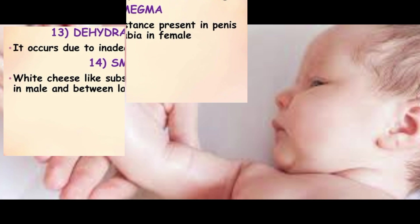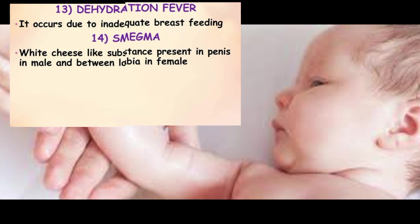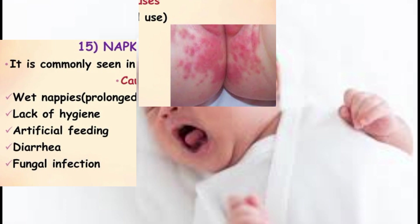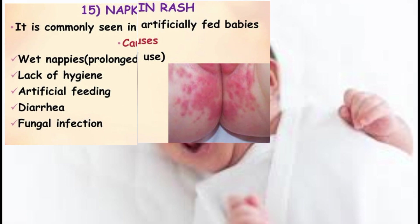Dehydration fever occurs due to inadequate breastfeeding. Another neonatal condition is smegma, a white cheese-like substance present in the penis in males and between the labia in females. Napkin rash is commonly seen in artificially fed babies; causes include wet nappies, prolonged use, lack of hygiene, artificial feeding, diarrhea, and fungal infection.